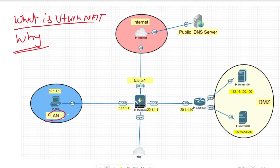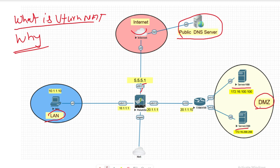You can see this is my LAN internal user, and this is my outside internet with a public IP address. This is my public DNS server, and here are Server 100 and Server 200, which belong to the DMZ zone. The zones are: DMZ, internet/outside, and LAN.